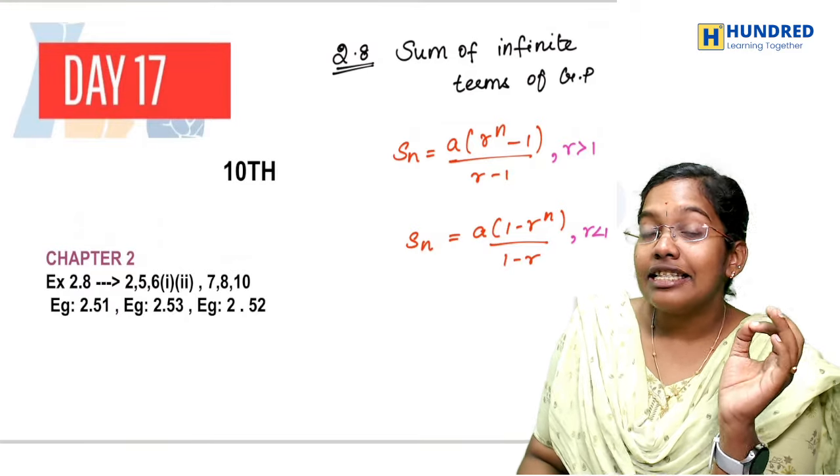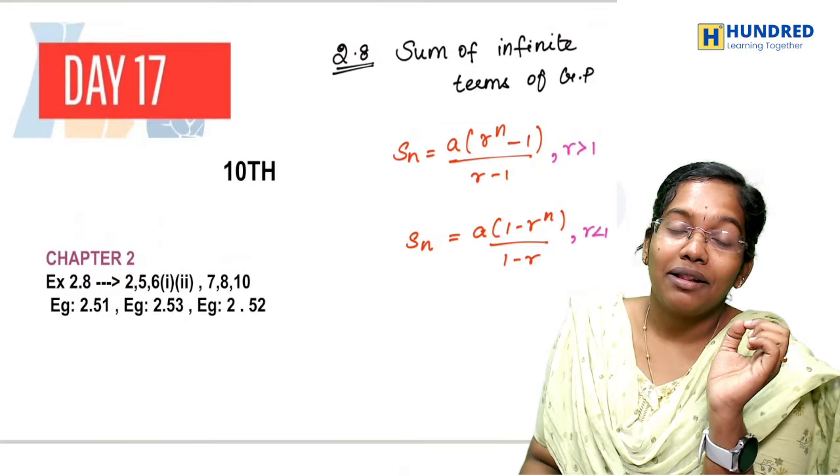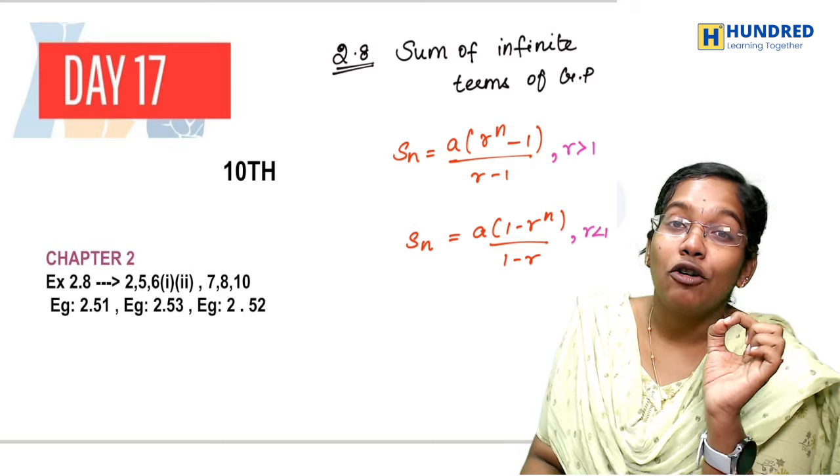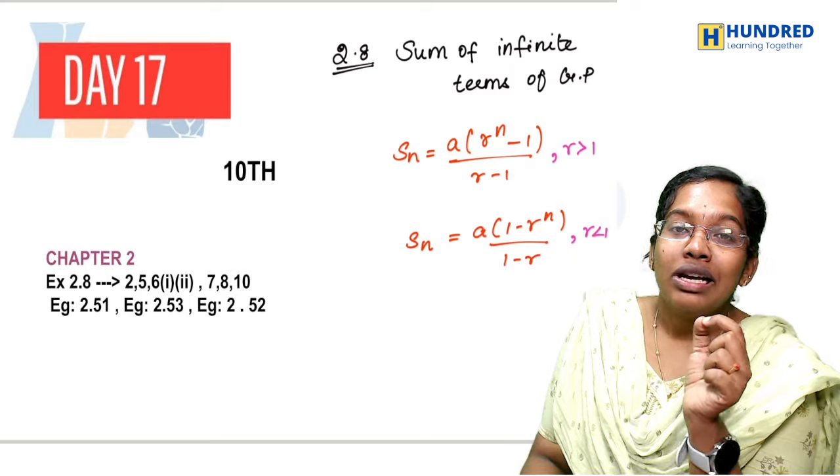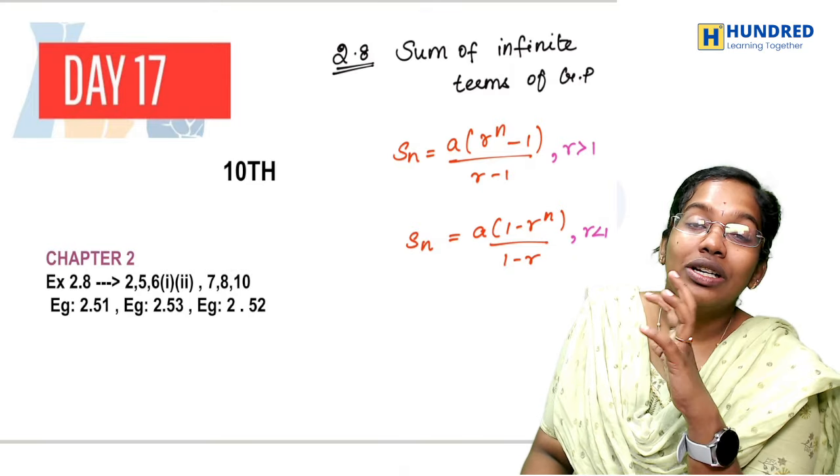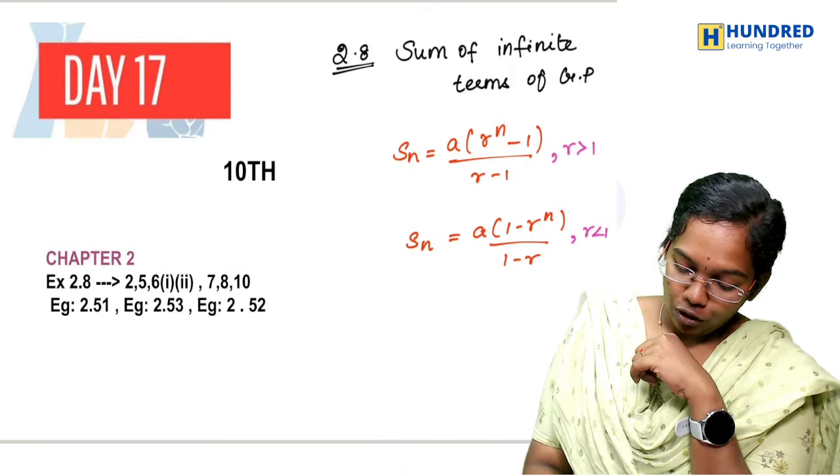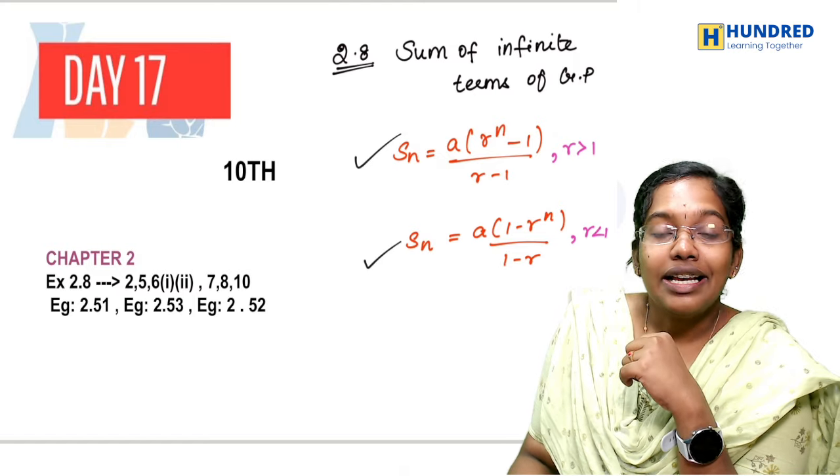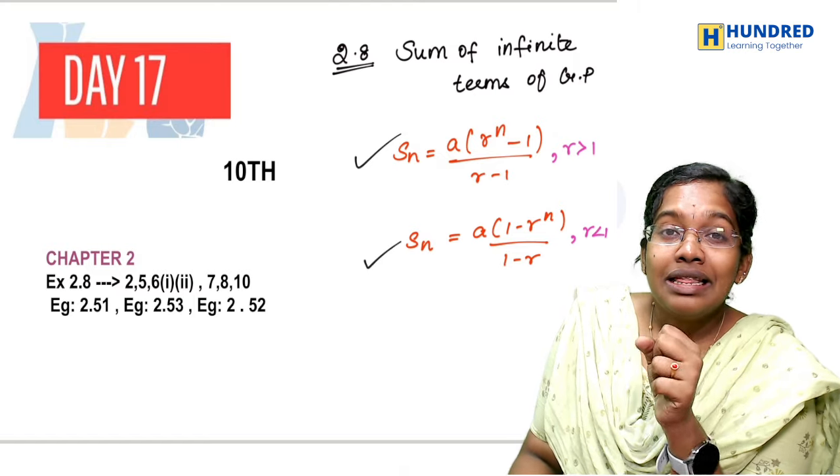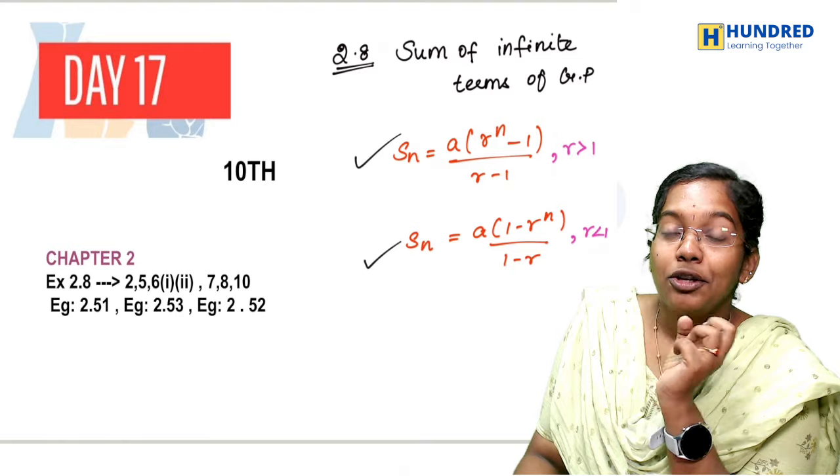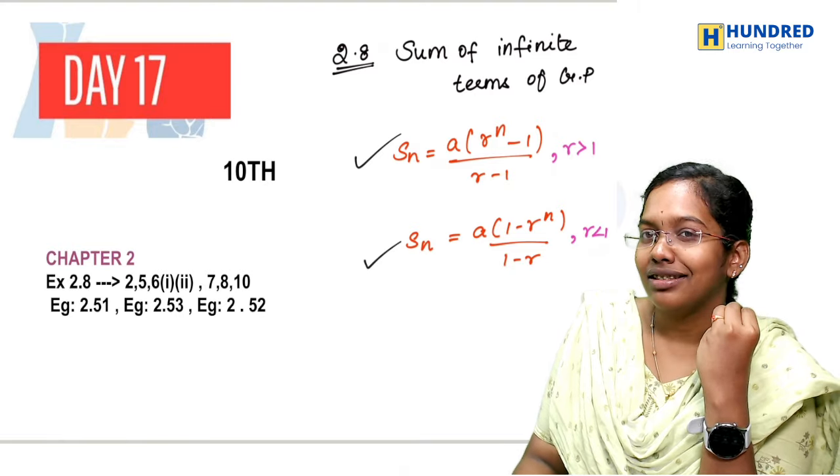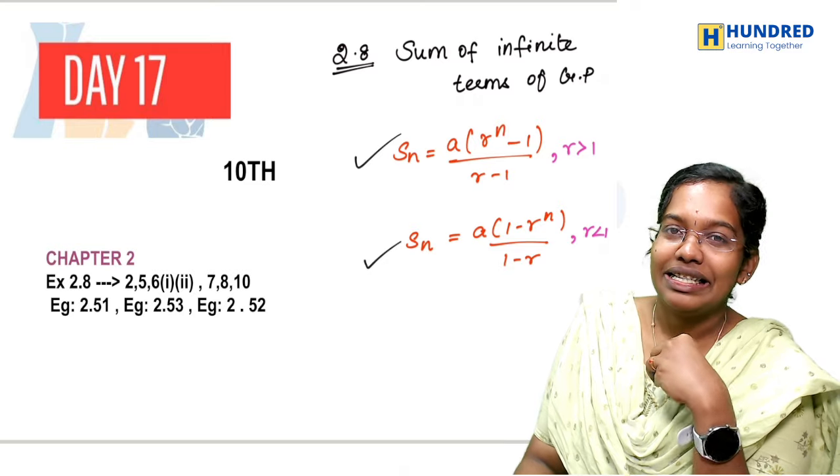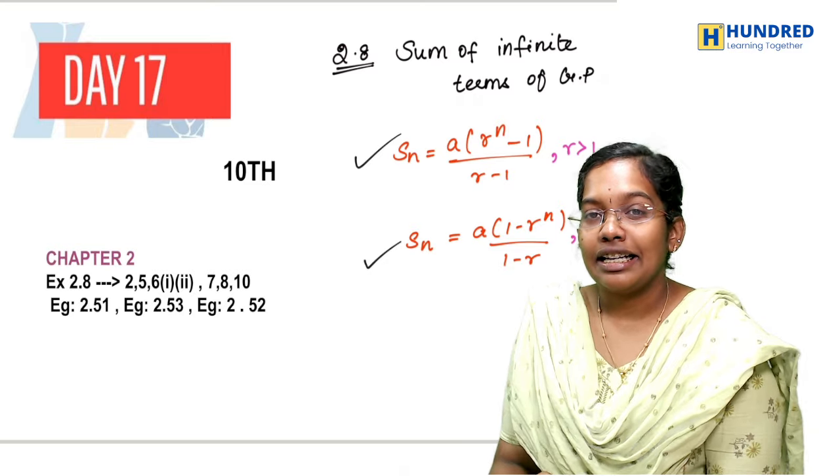Day 17, 10th Standard Students. Exercise 2.8 which is the sum of infinite terms of GP. In this case, the SN formula has an R value. The common ratio value is greater than 1 in one formula and less than 1 in another formula. The sum of infinite terms of GP in the 2nd chapter is very easy, so you can finish this correctly.